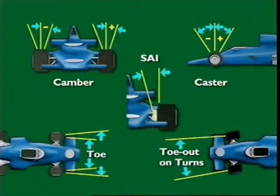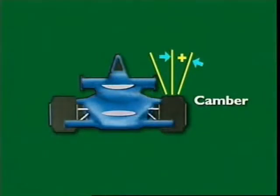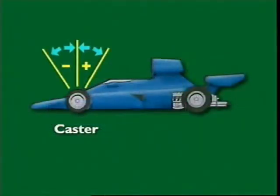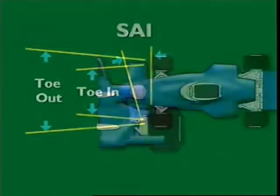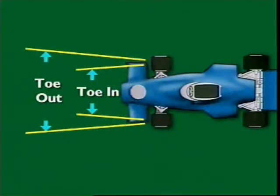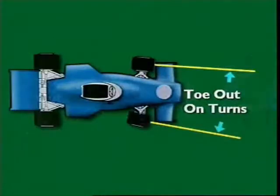The factors that affect wheel alignment are camber, caster, steering axis inclination, toe-in, toe-out, and toe-out on turns.